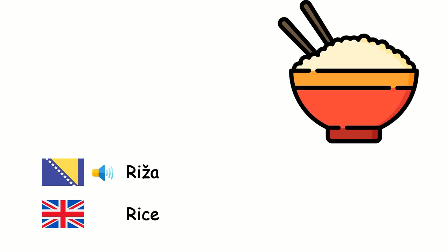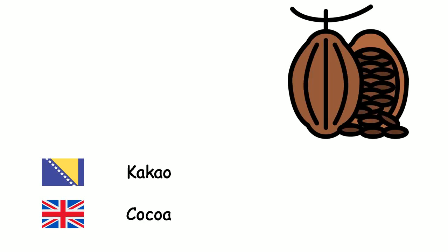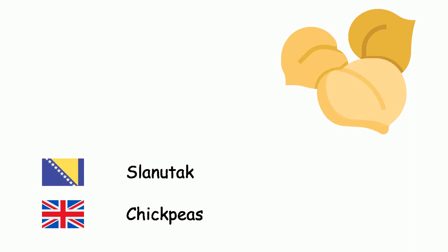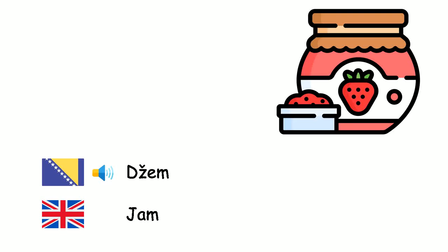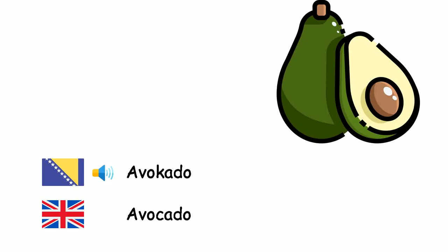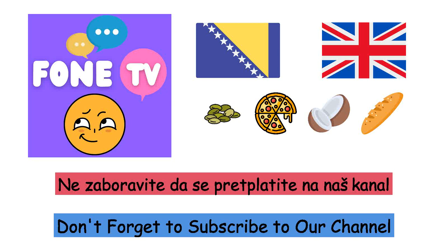Pirinač. Kakao. Slanutak. Džem. Avokado. — Rice. Cocoa. Chickpeas. Jam. Avocado. Ne zaboravite da se pretplatite na naš kanal. — Don't forget to subscribe to our channel.